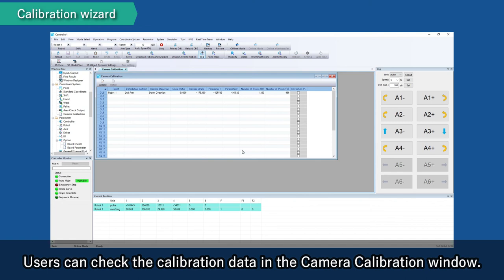Users can check the calibration data in the camera calibration window. That is all the explanation of calibration of the second arm view camera.